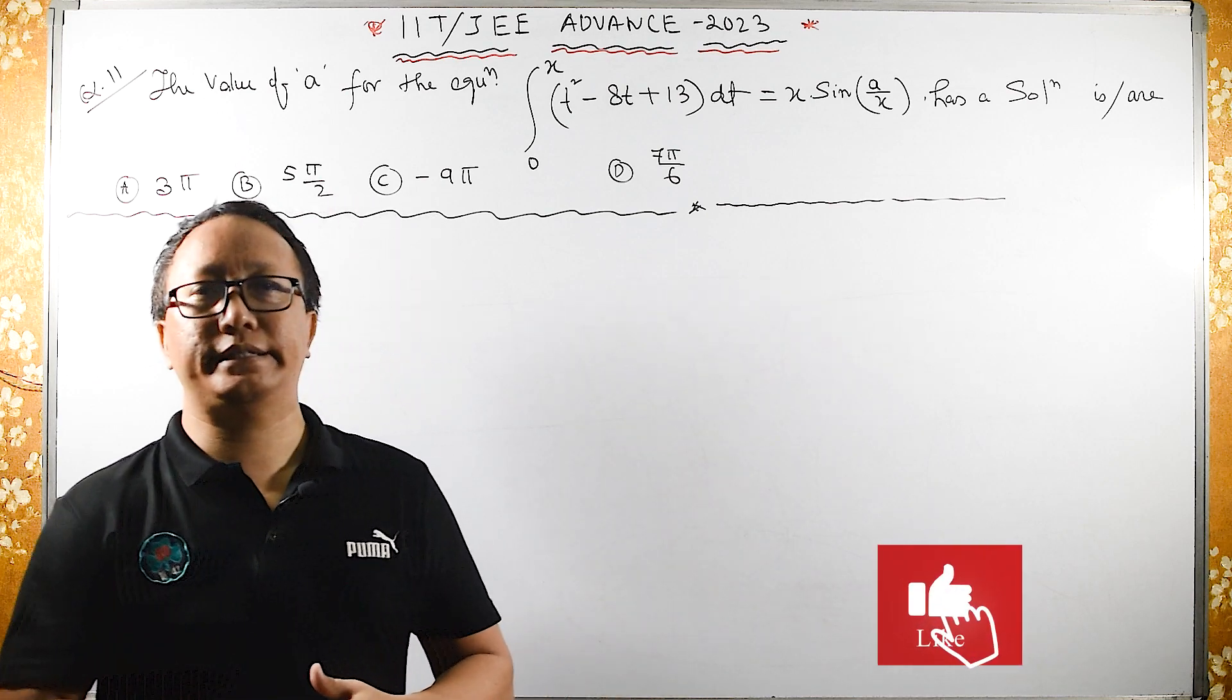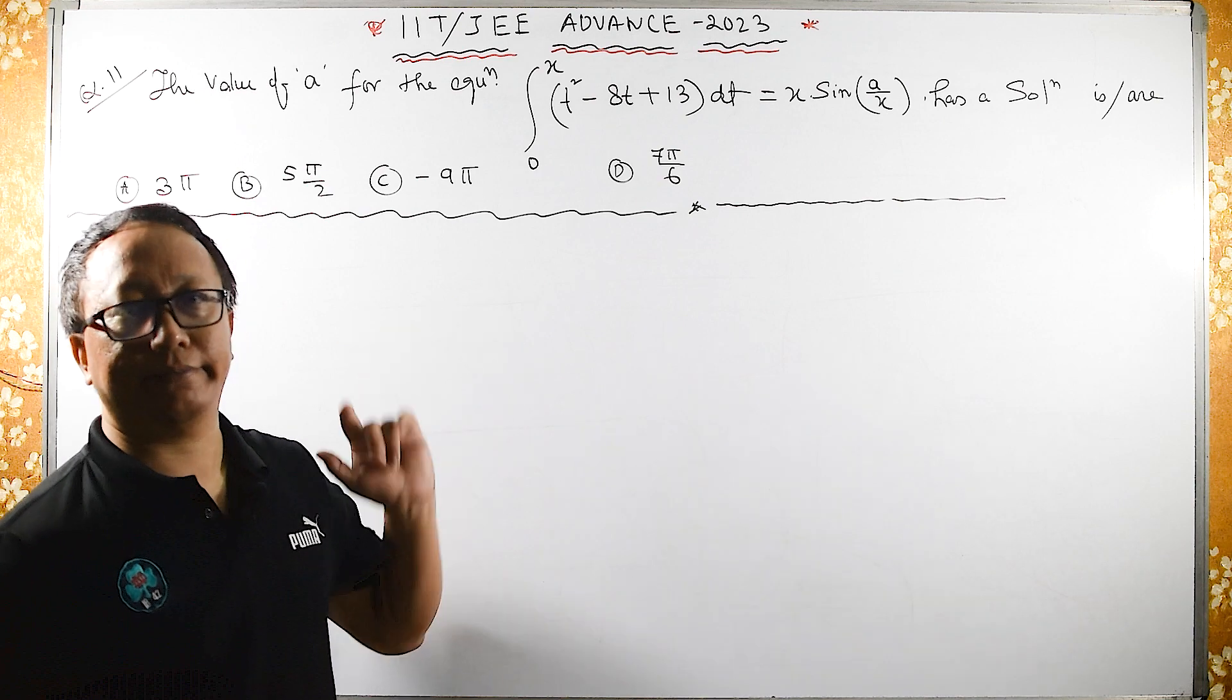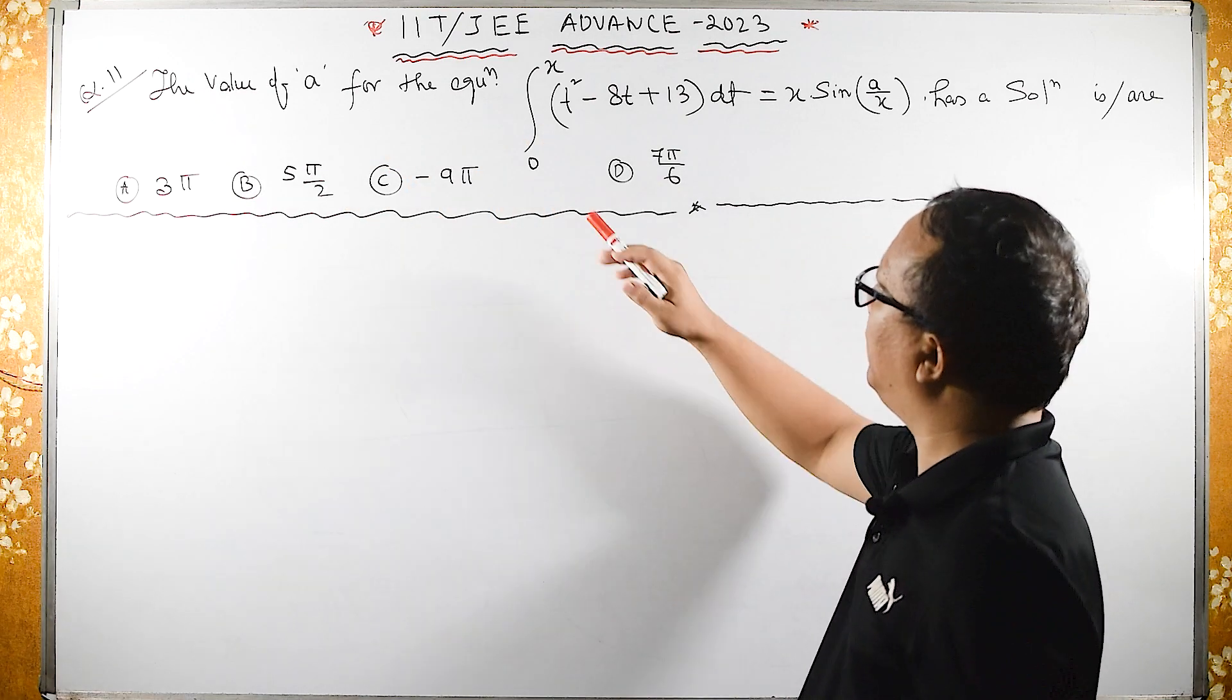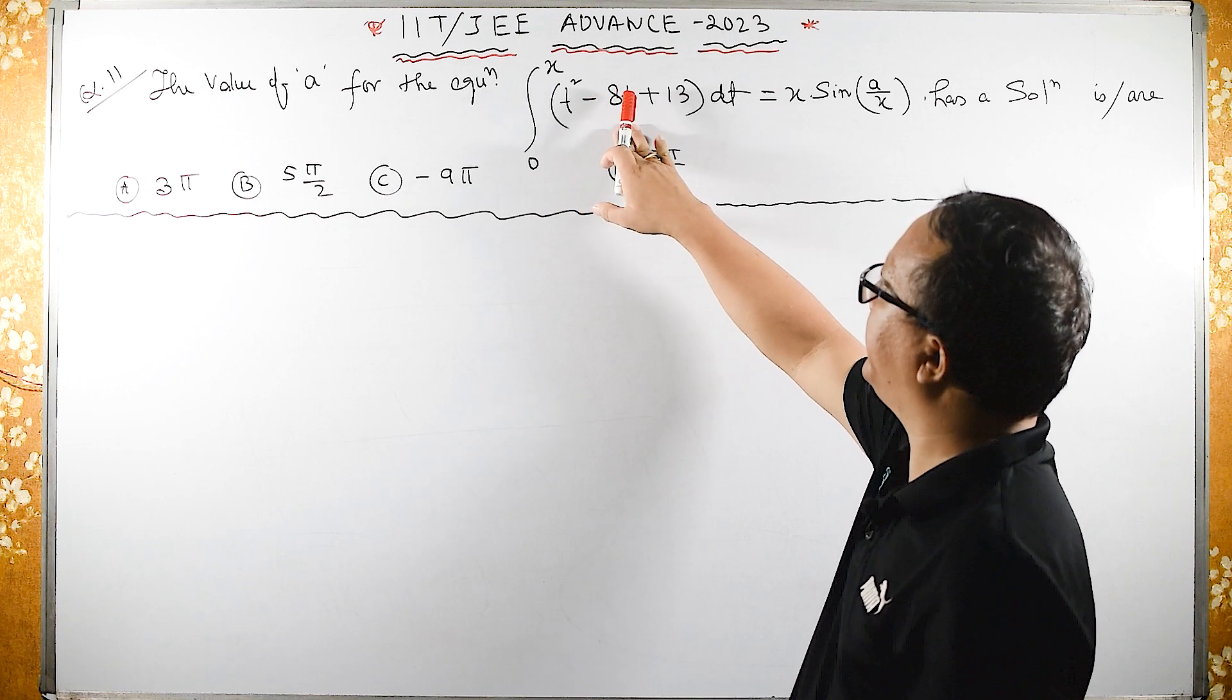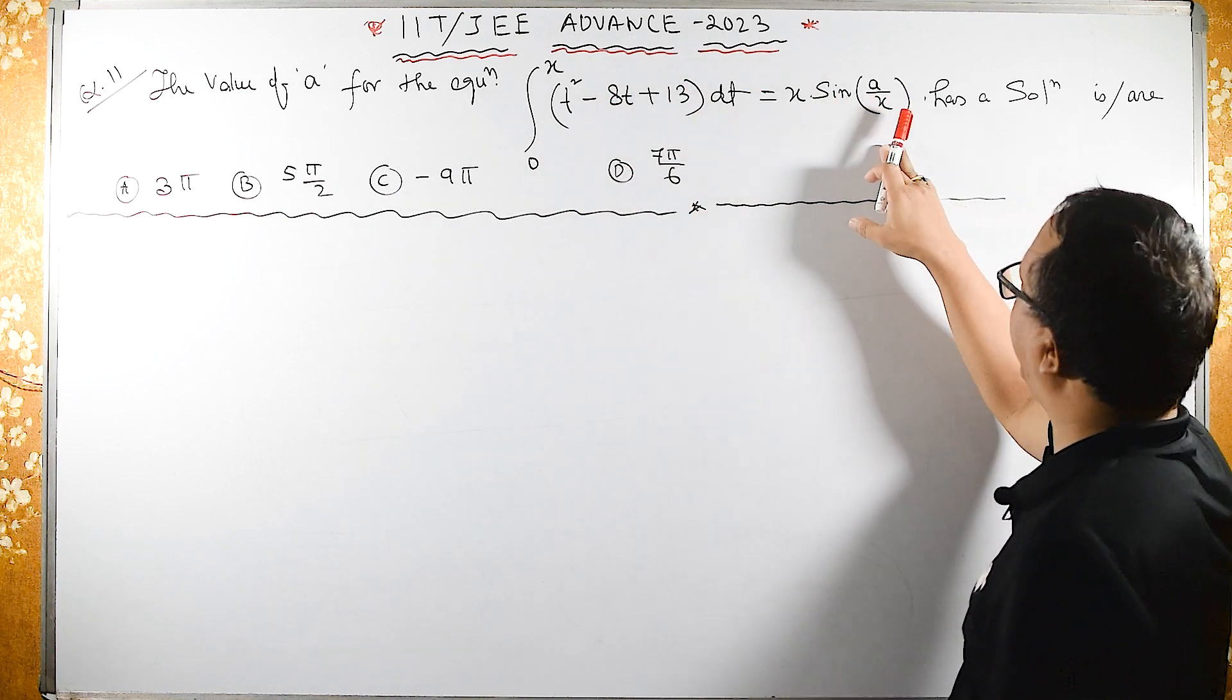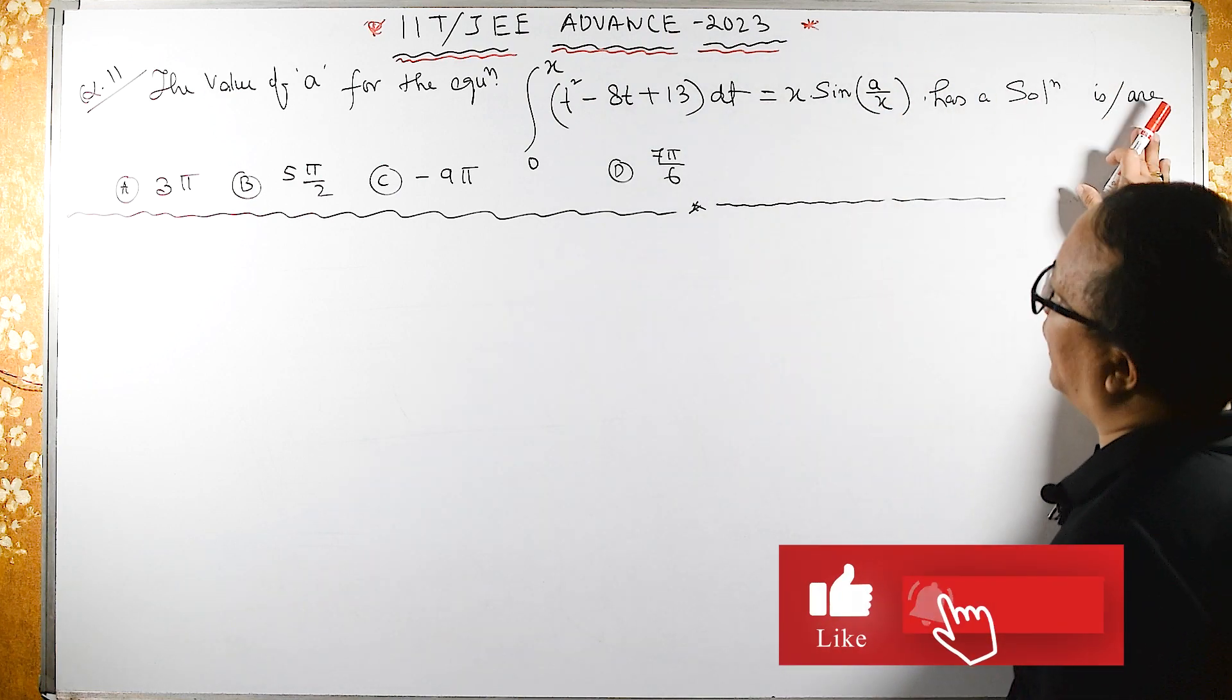This question was asked by IIT JEE Advanced India 2023, question number 11. The question is: find the value of A for this equation. The integral from 0 to X of (T² - 8T + 13)dt equals X·sin(A/X), has a solution, is or are.